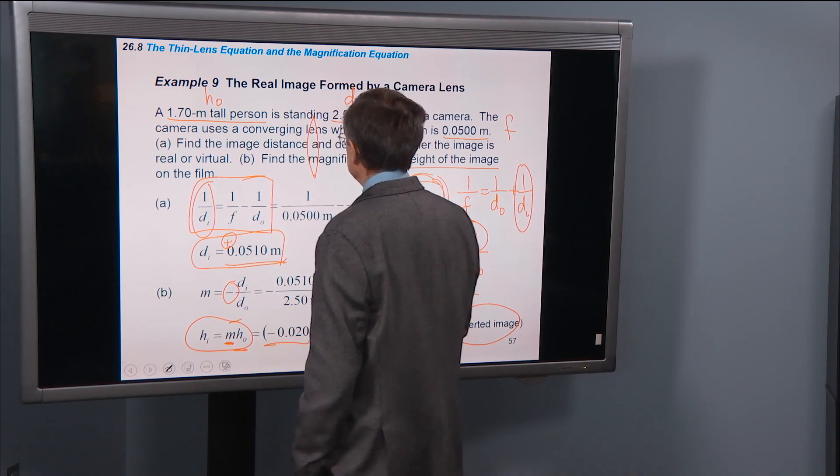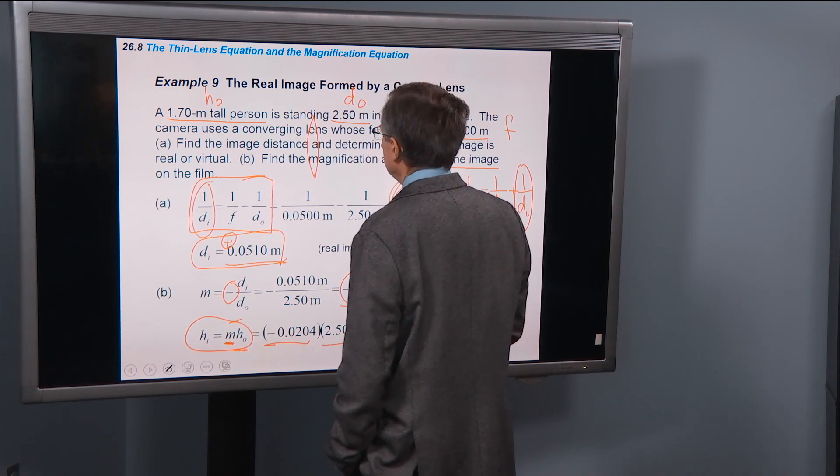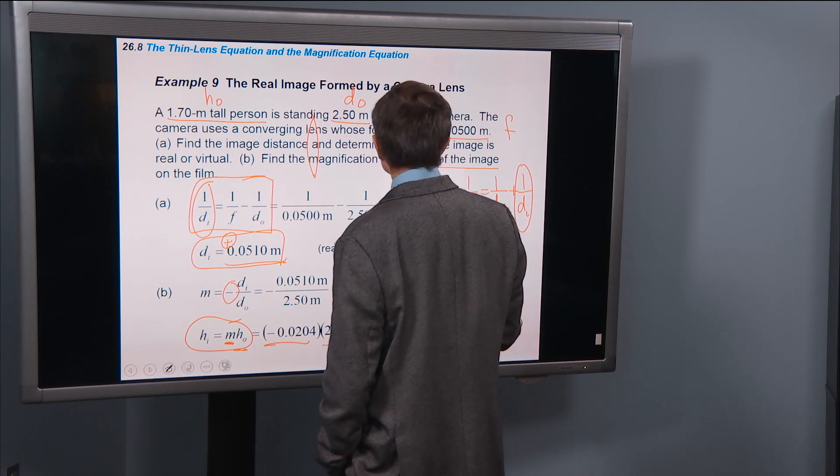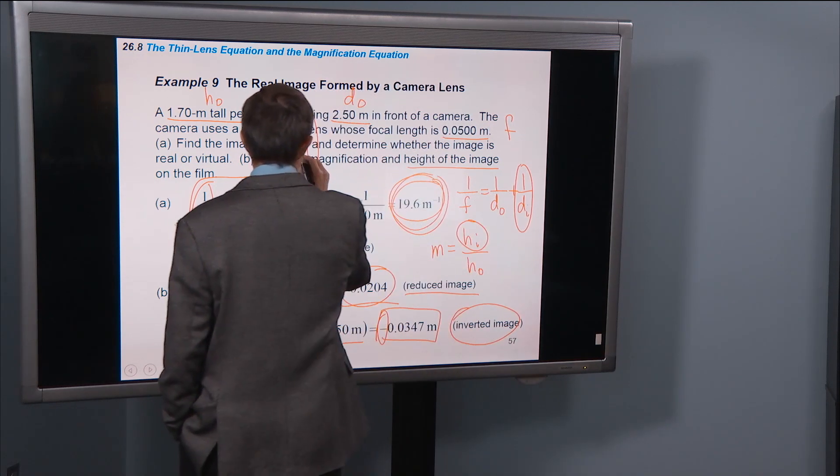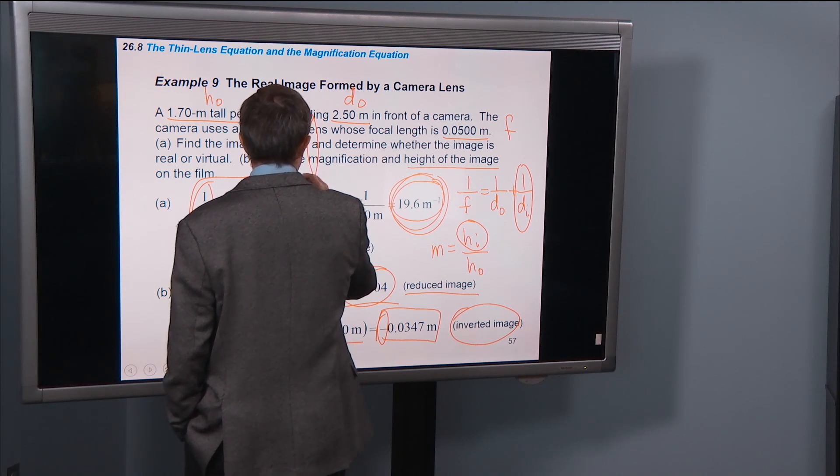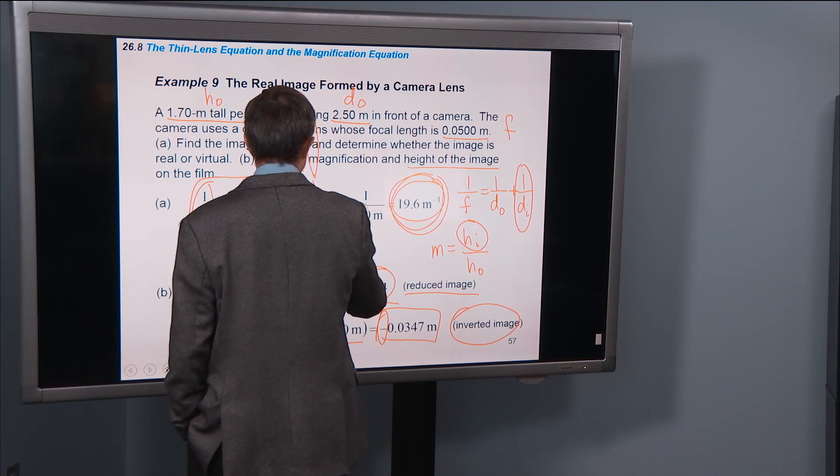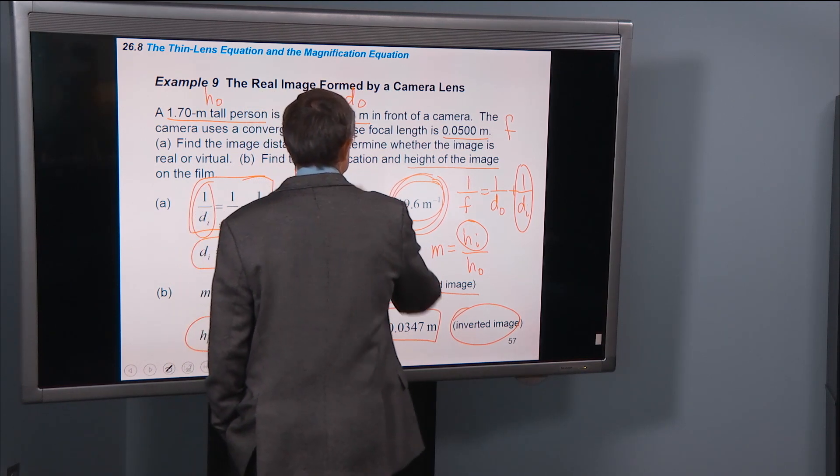So, here's the lens. The focal length of the lens is 0.05 meters. So that's, let's put our focal point here and we know that this is 0.05 meters. Happy day.